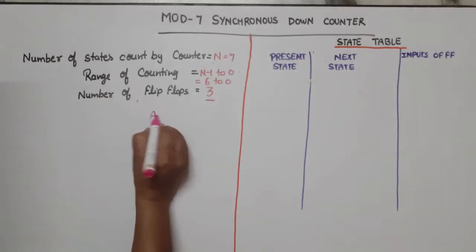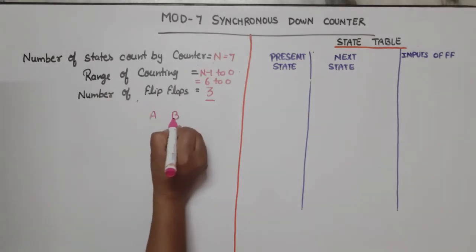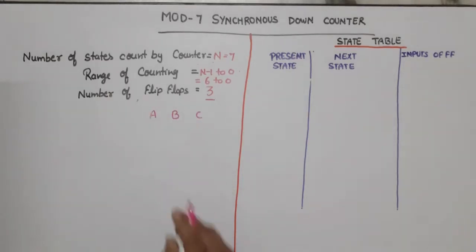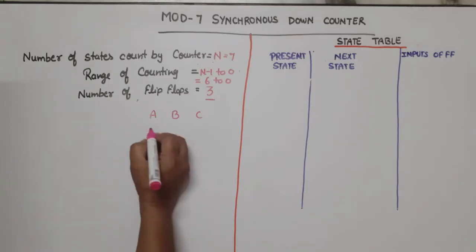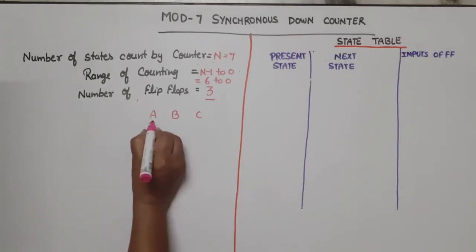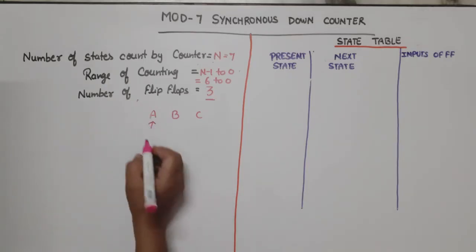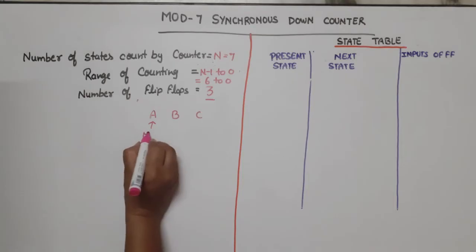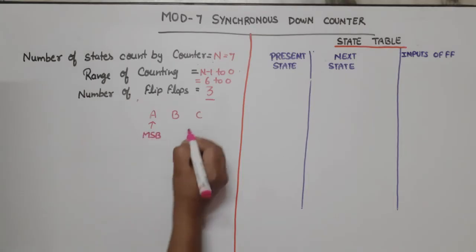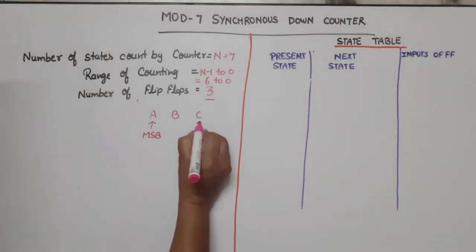Let these 3 flip-flops be named A, B, and C. You can choose any naming convention, but you should know which is the MSB bit. In my case, I am taking A as the MSB.